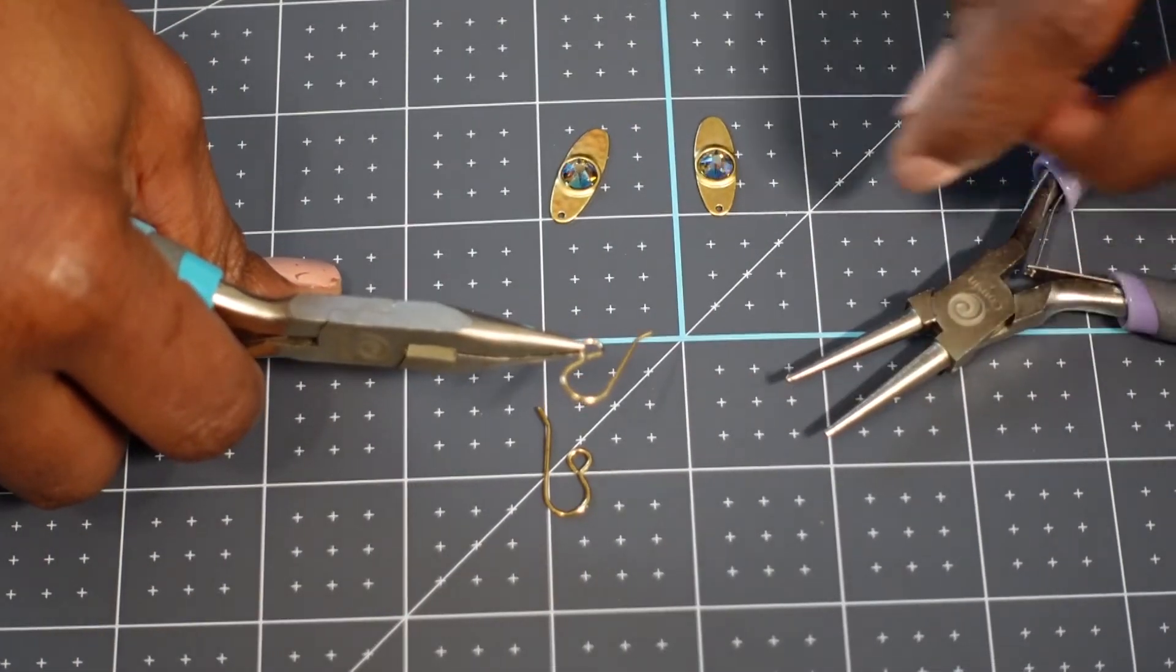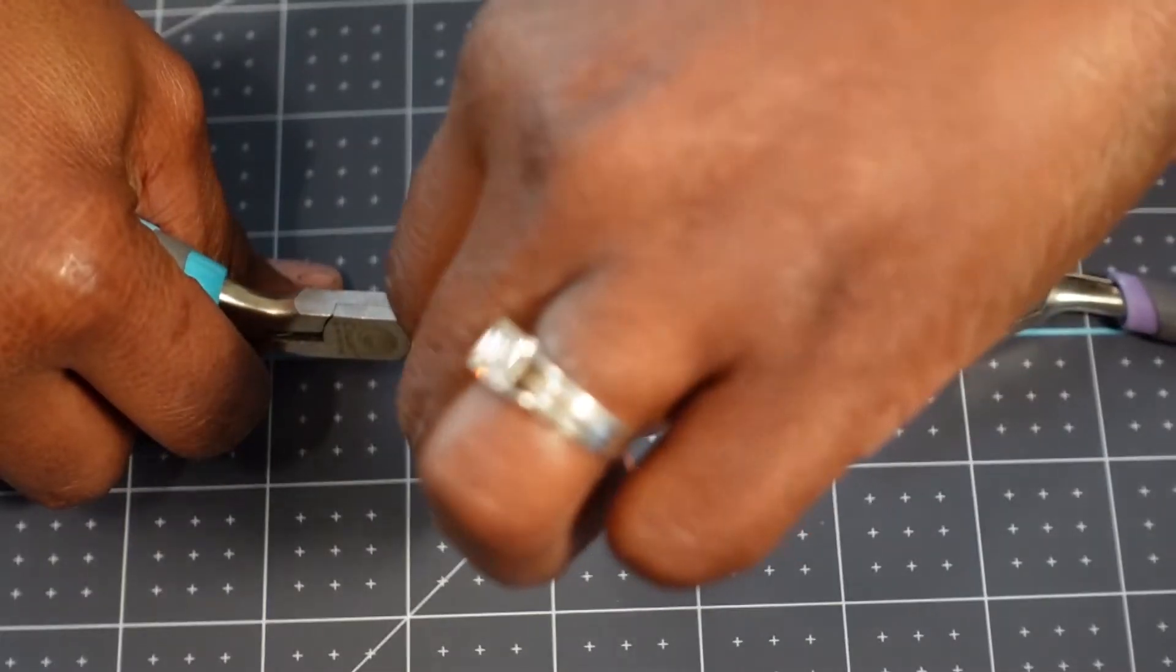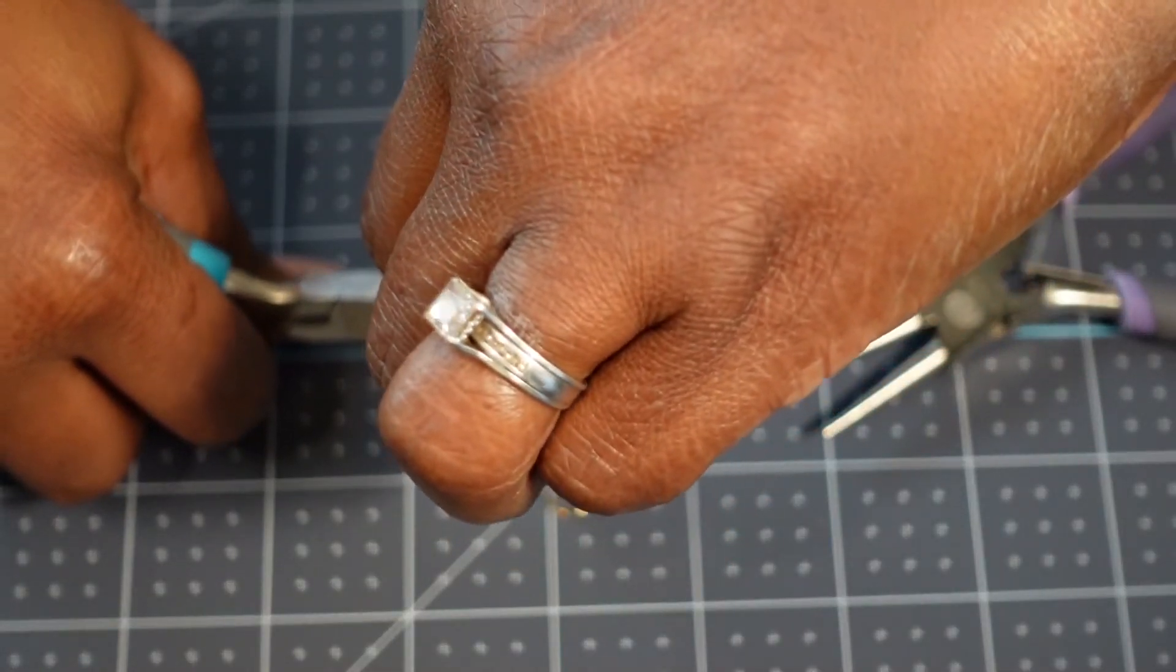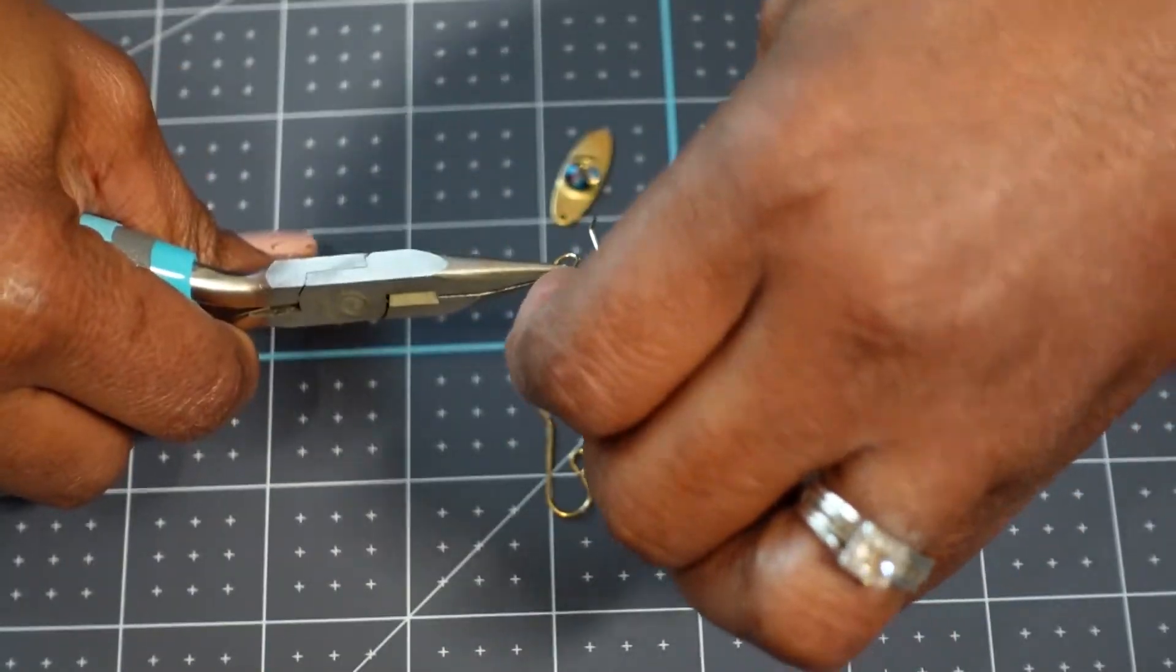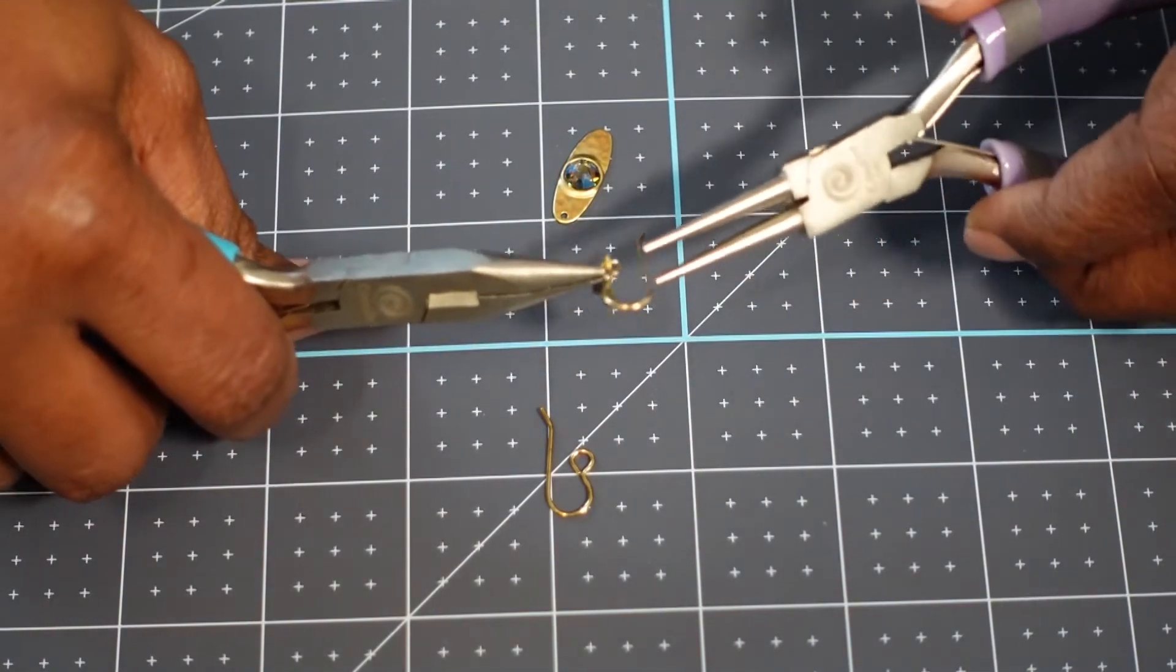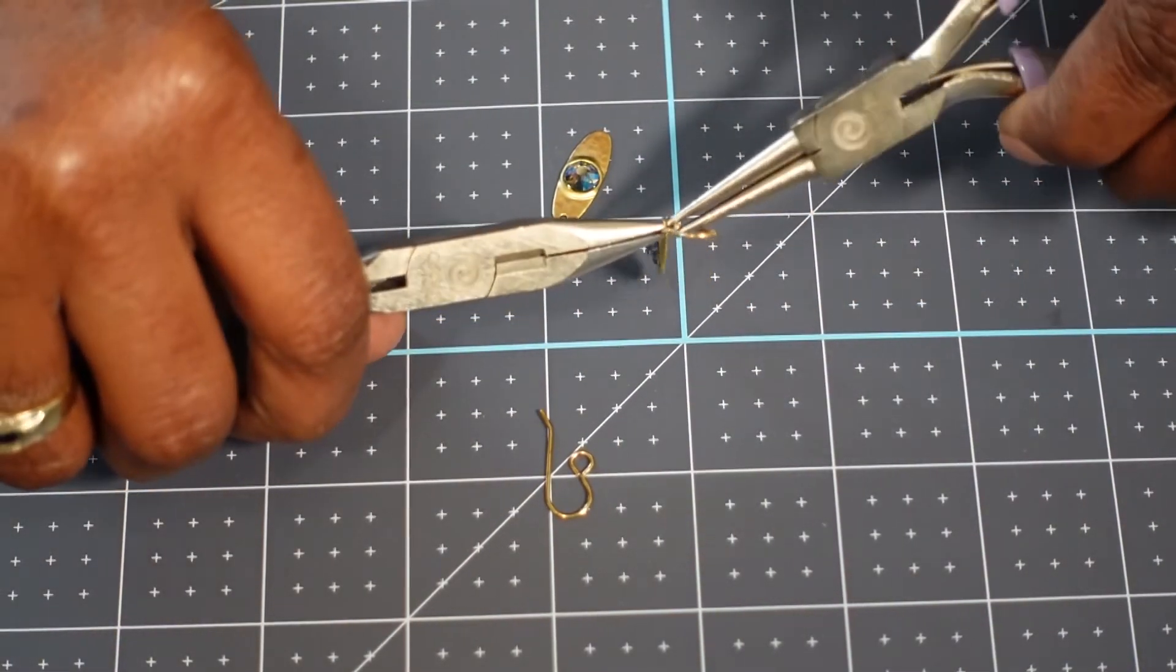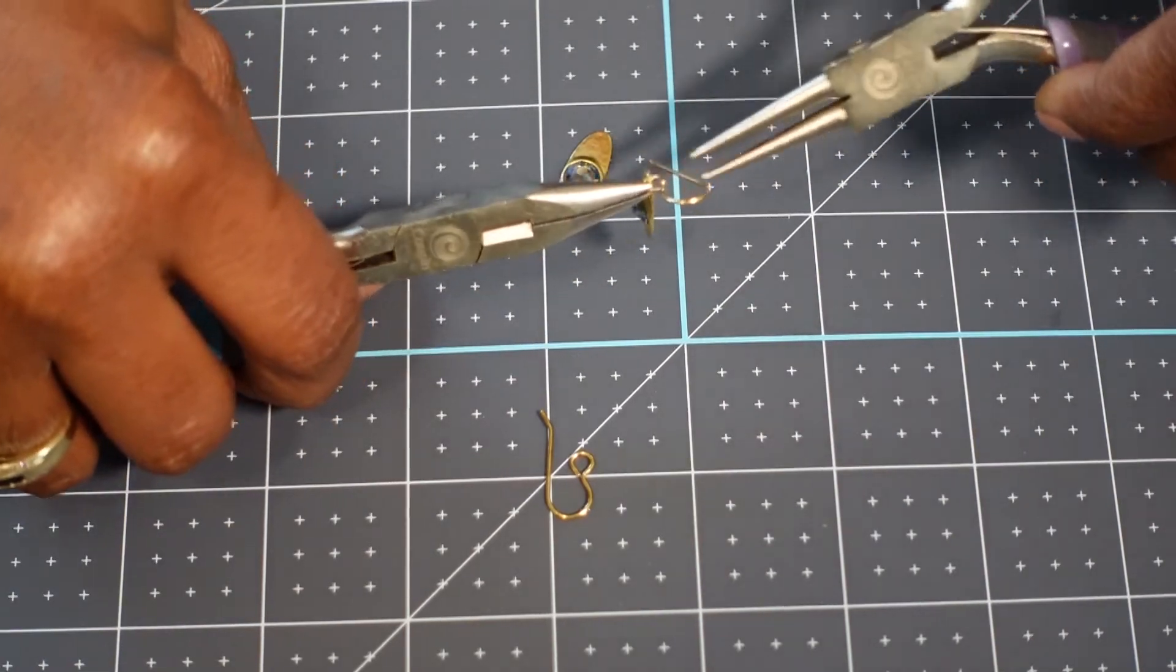And so once I have that open, then I'm just going to thread the pendant on. Sometimes you can just wedge it behind there. And I'm basically trying to put the little hole in. So you see I left just enough room to get that slit on there. And then I'm going to take my round nose pliers and I'm just going to twist it back into place.